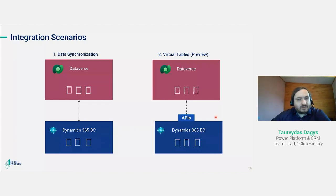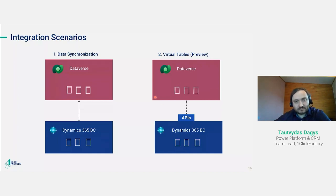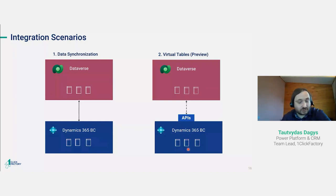Conflicts can be resolved manually or by setting automatic conflict resolution rules. For virtual tables, the approach is different: Business Central is the master, and in Dataverse you consume data through APIs without keeping a copy — data is always loaded live from Business Central. This is a newer approach, and while the virtual table technology in Dataverse is generally available, the data provider for Business Central is still in preview.